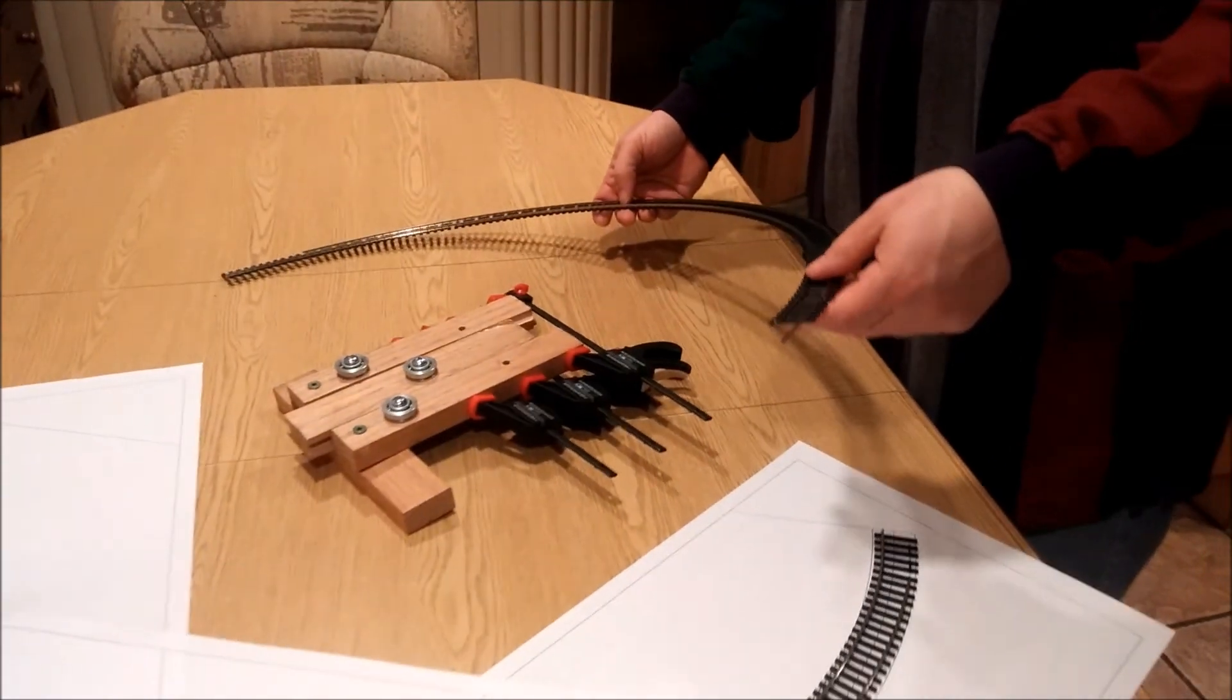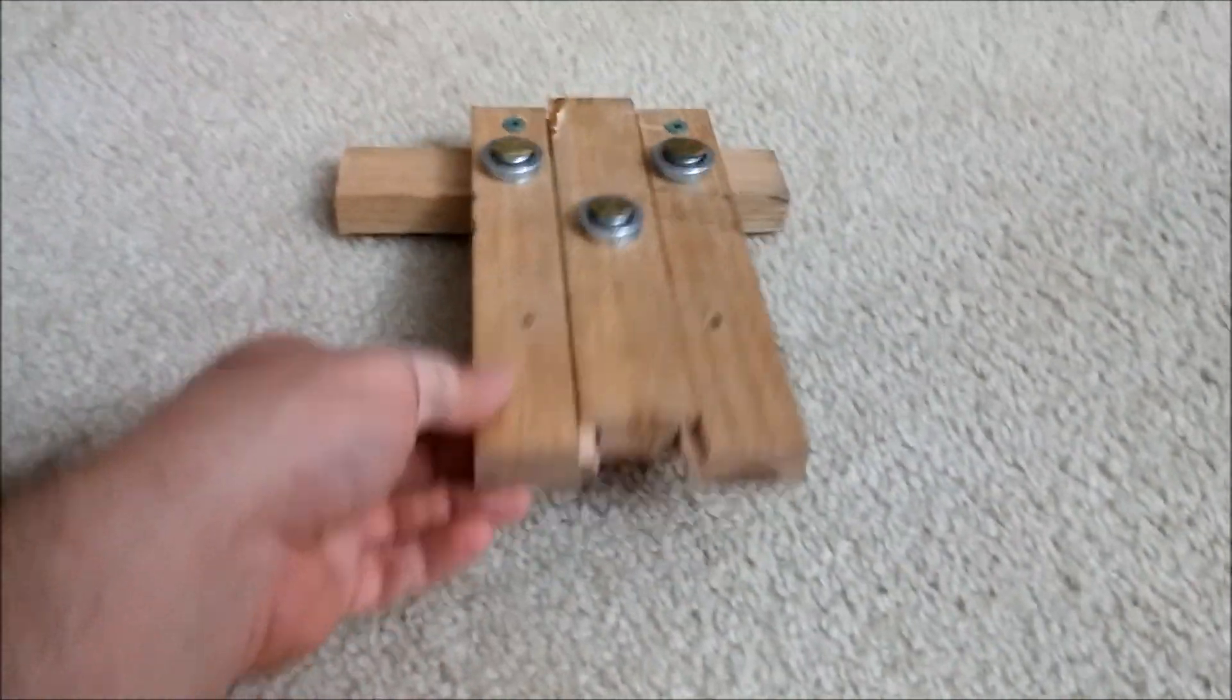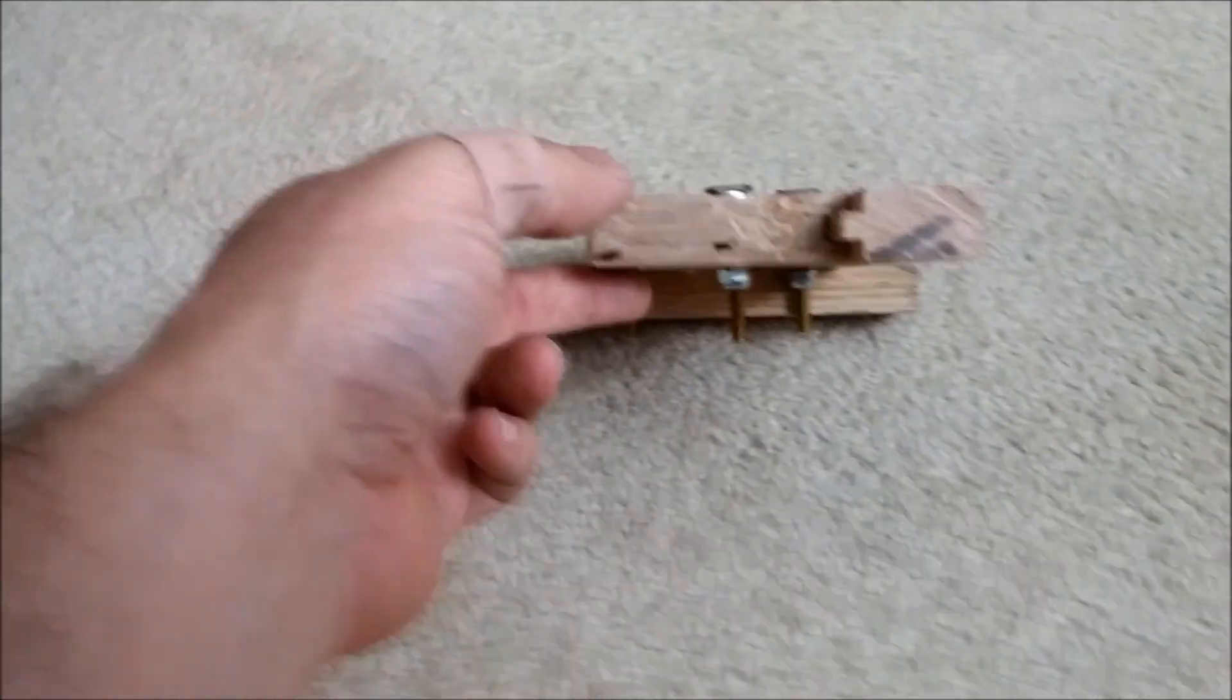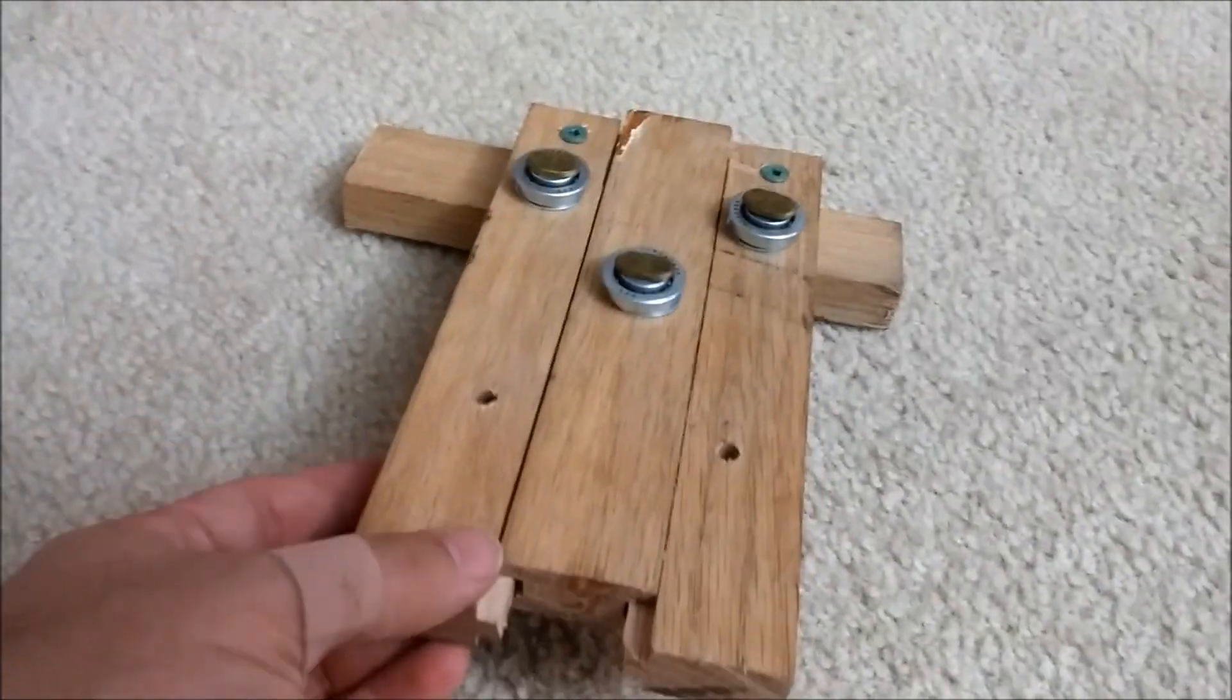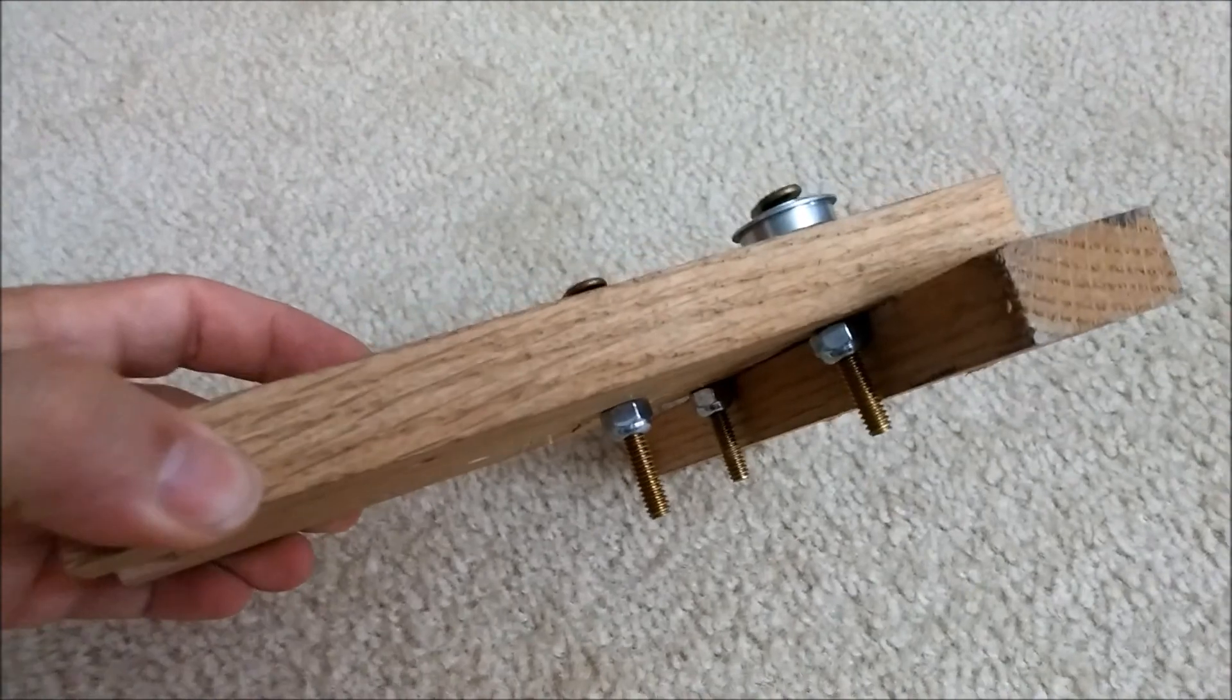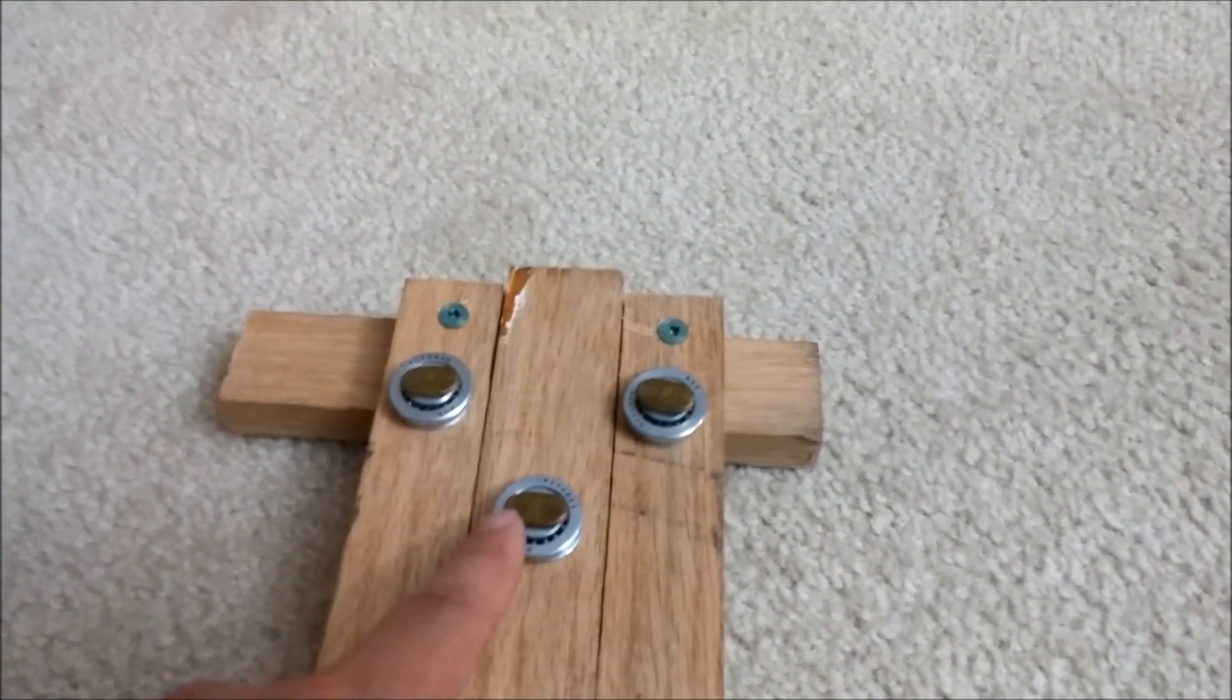Here's some details on the track bender. It's just three pieces of wood—this was some scrap wood—tongue and grooved so that the pieces would stay together. You can see the tongue and groove a little bit better. Those are roller bearings.